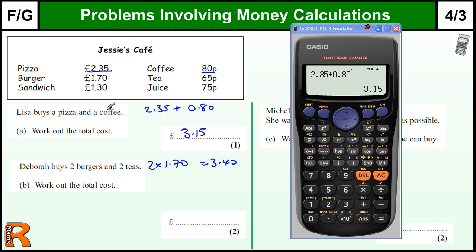And two teas - two 65 pence - we've got two times 65 pence which is 130 pence or £1.30. And you can add that up - it's £4.70.